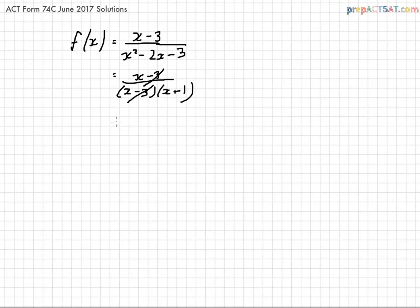This factor here cancels itself out. That's what results in the hole in the graph. This one here is what's going to give you the vertical asymptote. So the question is actually asking for the domain of this function.